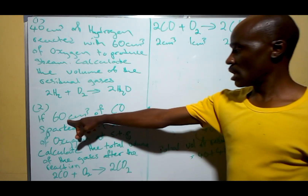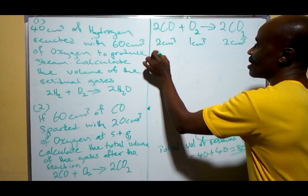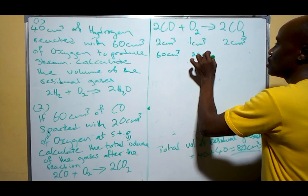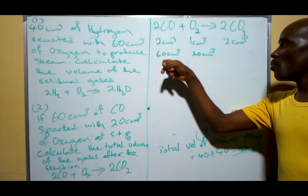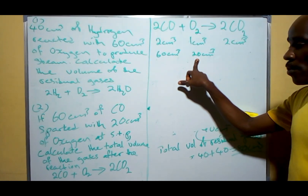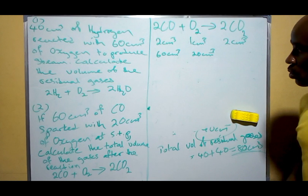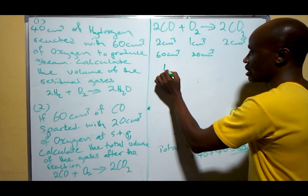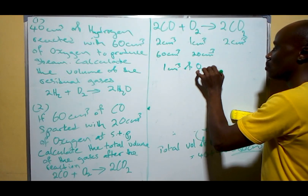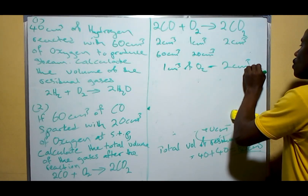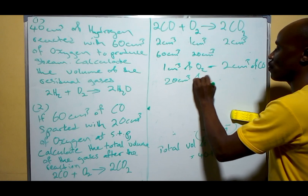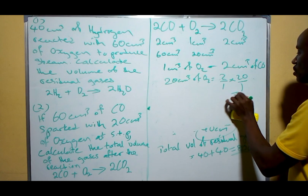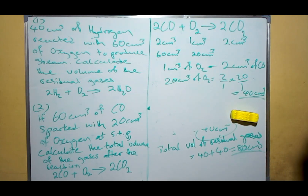So in this case we look at it. We have 60 cm³ of CO and 20 cm³ of oxygen. The CO appears to be in excess. What we are going to find out is the volume of CO required to bond completely with 20 cm³ of oxygen. From the equation, 1 cm³ of oxygen requires 2 cm³ of CO. So 20 cm³ of oxygen will require 2/1 × 20 = 40 cm³ of CO.